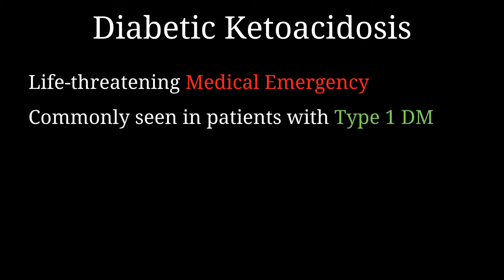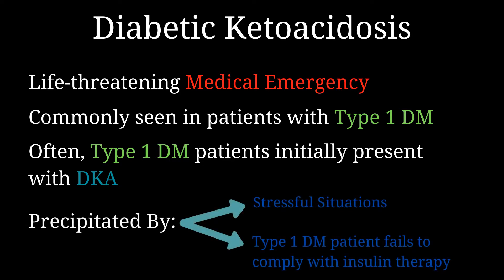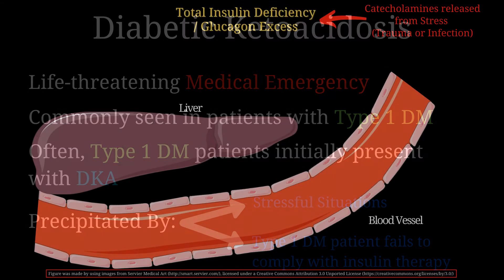Diabetic ketoacidosis is a life-threatening medical emergency commonly seen in patients with type 1 diabetes mellitus. Often, diabetic ketoacidosis is the initial presentation — patients come to the hospital presenting with DKA and are then diagnosed with type 1 diabetes mellitus, which is when they start taking insulin. This condition is worsened by stress, or if a patient who already has type 1 diabetes mellitus fails to take their insulin dosage.